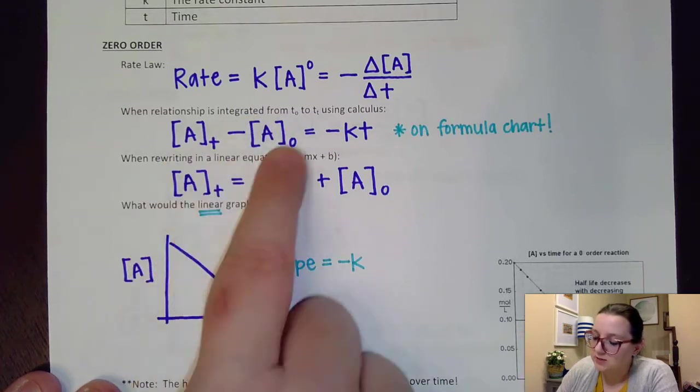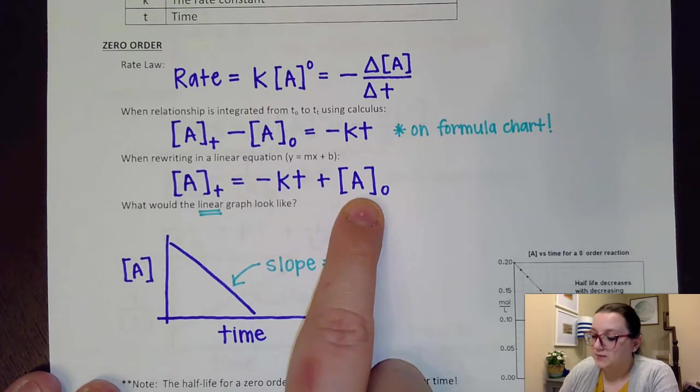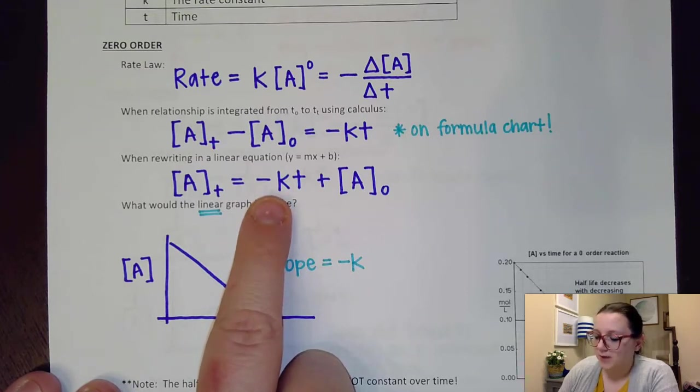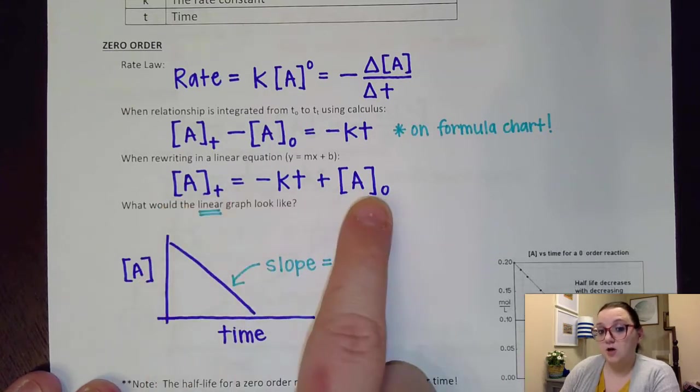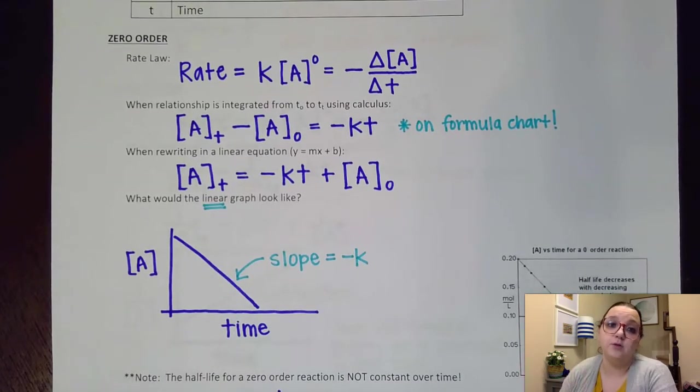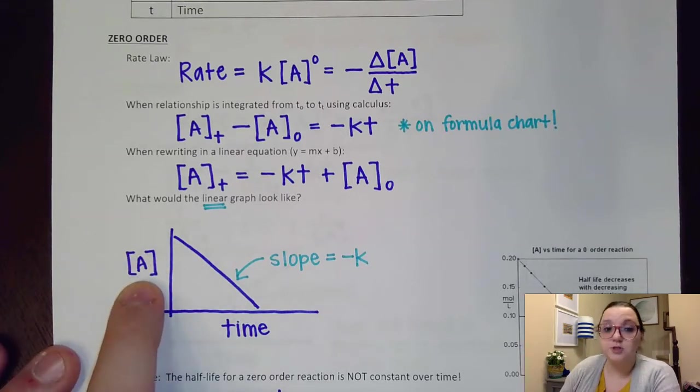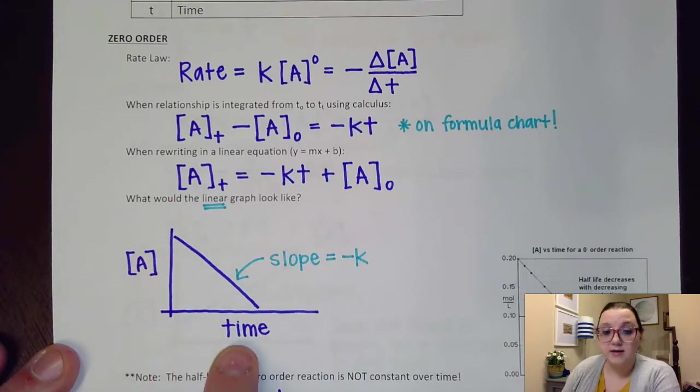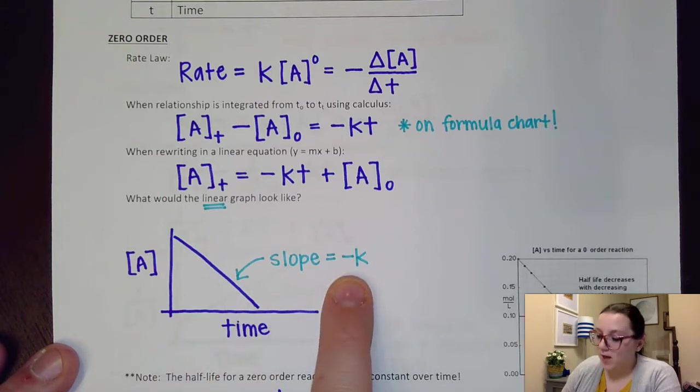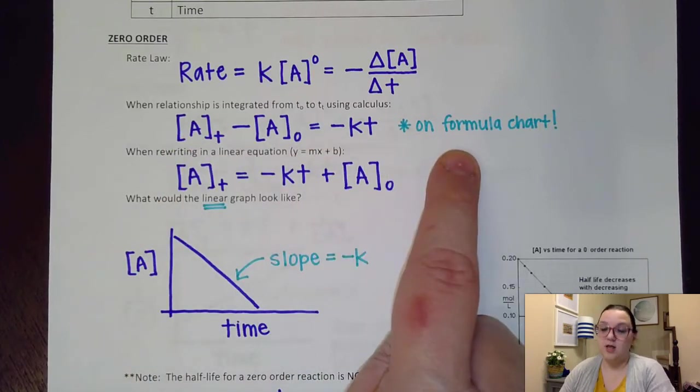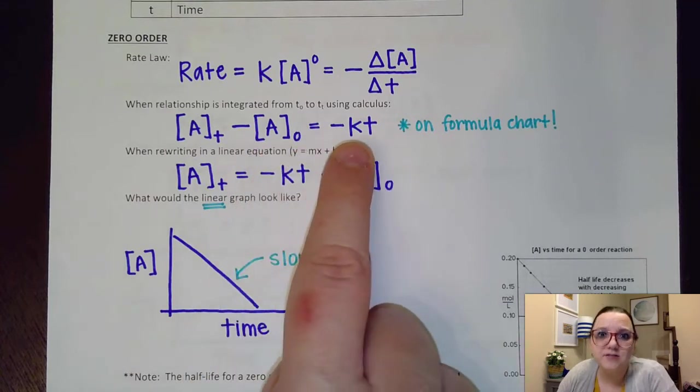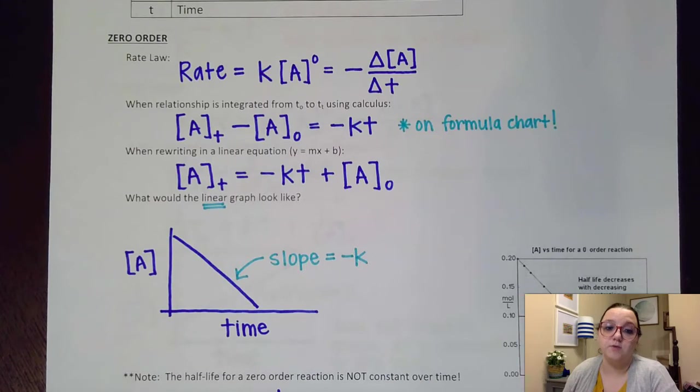When I do that, when I bring over this A sub zero over, what happens is that I see K ends up being my slope for this equation. I also see that when I'm dealing with my Y and my B, I'm looking at those differences in concentration at those various times. So if I wanted to address what a linear graph would look like for zero order, it would have the concentration of A over here on the Y axis, time on our X axis with a slope decreasing down. That would be that negative K. By the way, this equation here is on our formula chart, and I'll show you where here in just a little bit. So what we can do is if we have some concentration data and we have some time data, I can use this equation to end up solving for K.